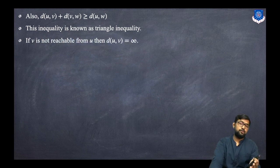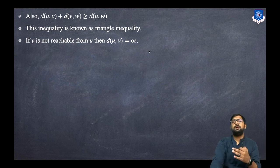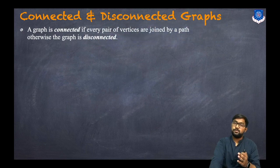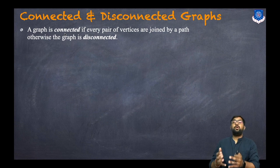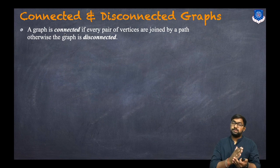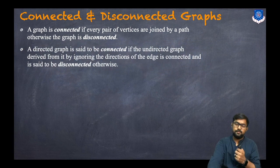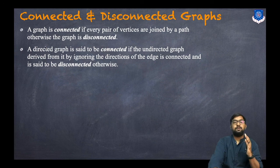If v is not reachable from u, then the distance d(u, v) is infinite. Now let us understand connected and disconnected graphs. A graph is said to be connected if every pair of vertices are joined by a path; otherwise the graph is disconnected.